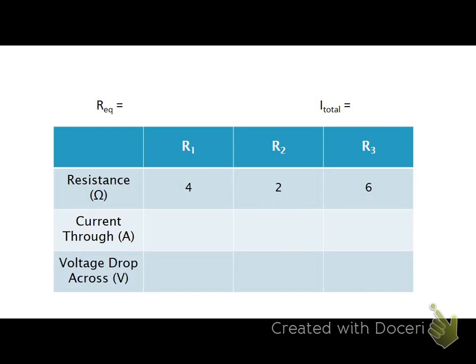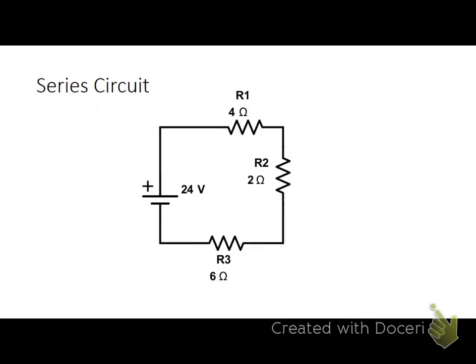Now in order to do that, I first need to figure out the equivalent resistance of the circuit and the total current running through it. Well the nice thing is, for a series circuit, the equivalent resistance is really easy to figure out. It's just the sum of each of the individual resistors all in series.